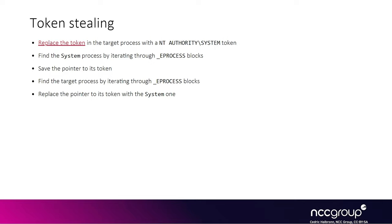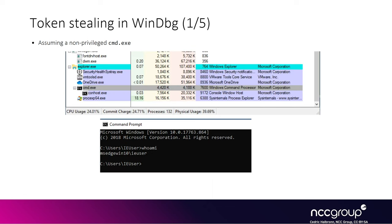You find that token pointer and patch your own target EPROCESS structure to use that privileged token. The first step is to find an EPROCESS structure of any process, then walk the linked list of EPROCESS structures until you find a privileged process, grab the pointer to its token, then continue walking the list until you find your target process, and finally patch your target EPROCESS to point to the privileged token pointer. In this example, we assume we have an unprivileged command prompt, cmd.exe.